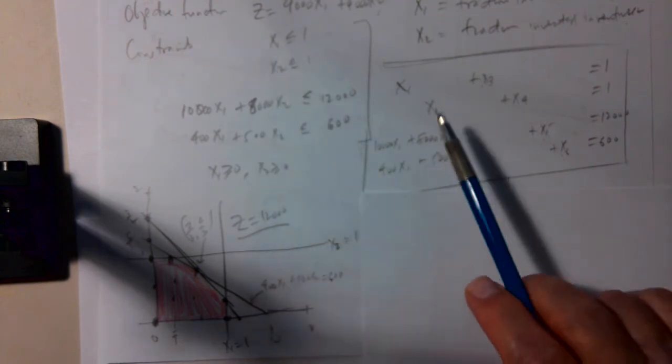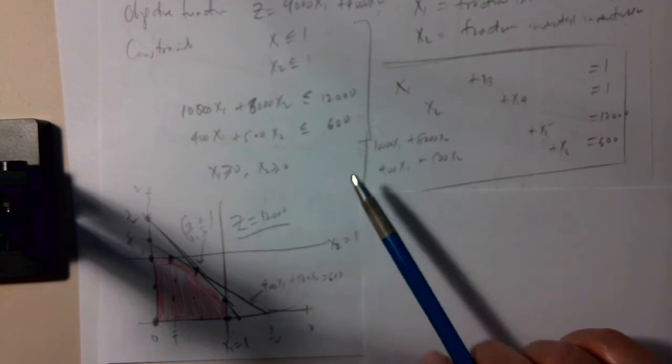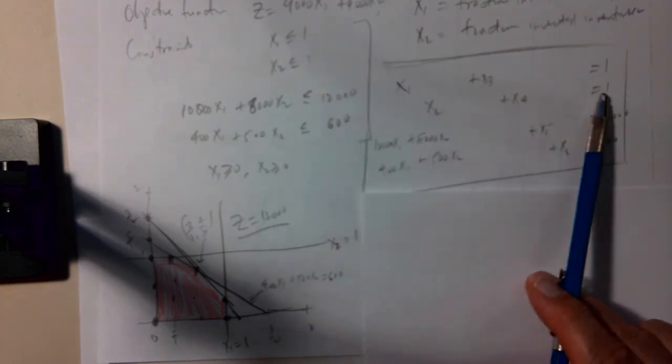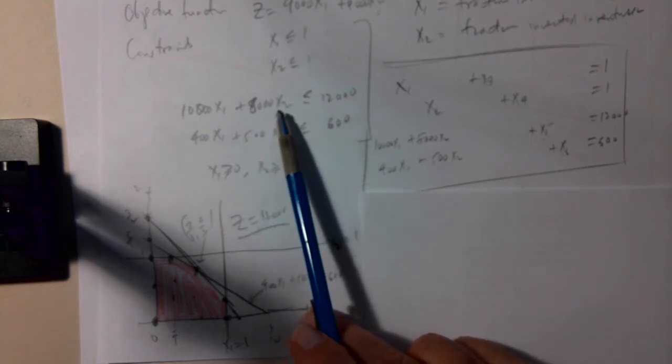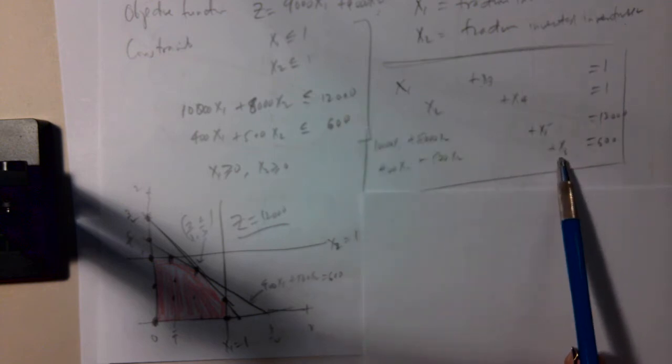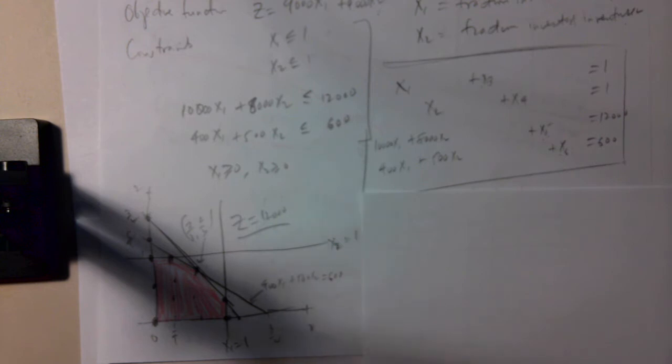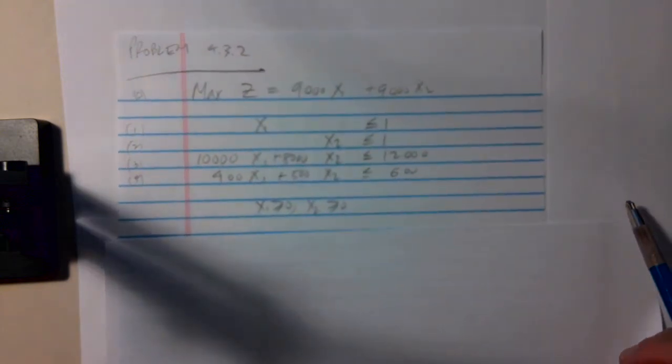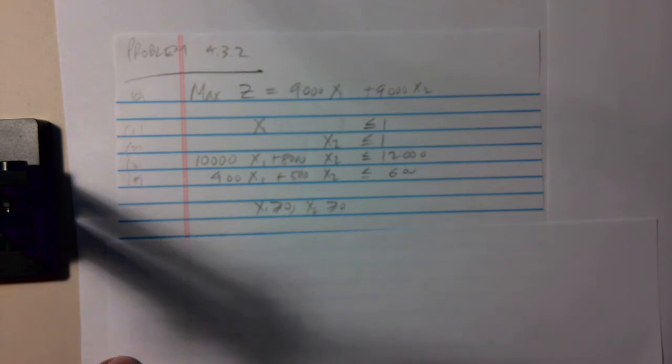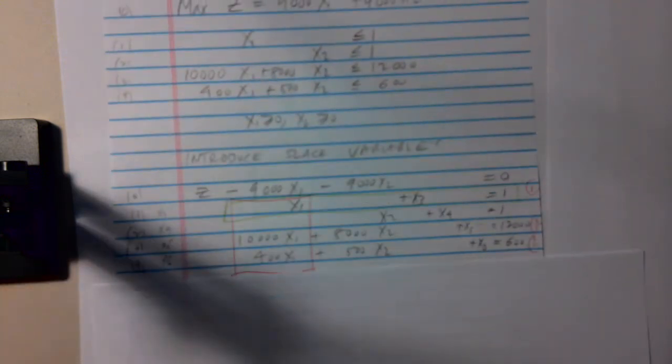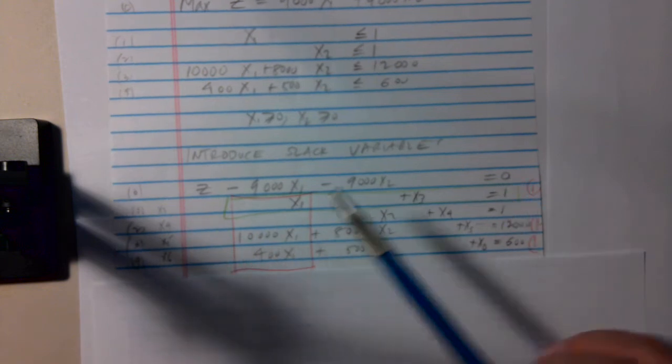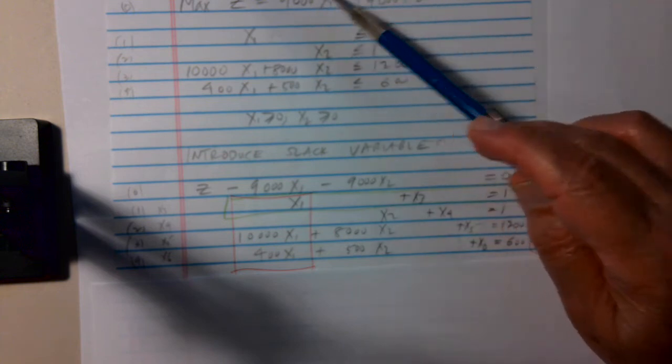So we introduce slack variables. X1 less than or equal to 1 becomes the equation X1 plus X3 equals 1. X2 less than or equal to 1 becomes the equation X2 plus X4 equals 1. We introduce the slack variable X5 into this constraint inequality, and the slack variable X6 into this constraint inequality. So let's put this in the standard form for an algebraic solution.